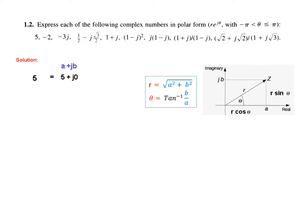We start by writing the number in the form a plus jb. For 5 plus j0, we calculate the magnitude r which is 5, then we calculate the angle theta using tangent inverse of b over a. Since b is 0 and a is 5, we get 0 over 5, which is 0 degrees.